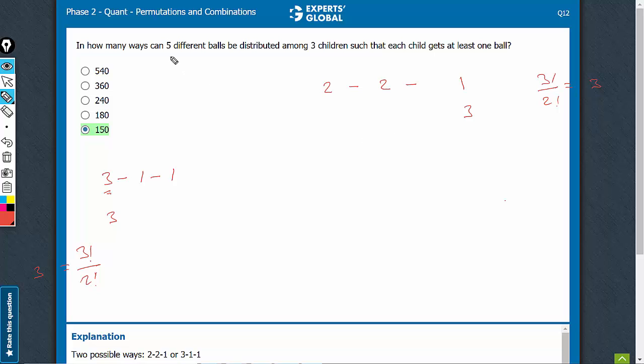And now, talk about the actual distribution of five balls. Five balls, two can be given in 5C2 ways. Then three remain. They can be given in 3C2 ways. And the one that remains automatically goes to child who gets one. So, this is 10 times 3 times 1, 30.